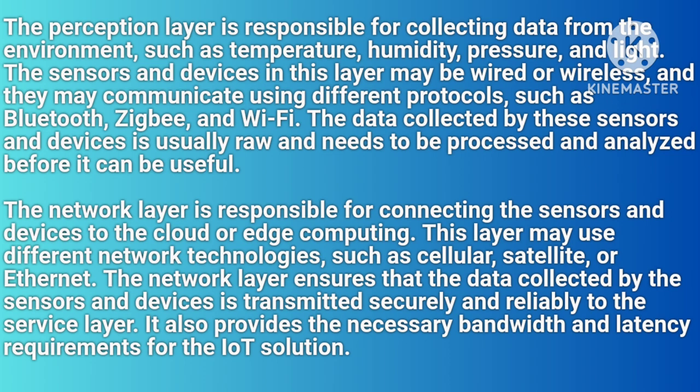The perception layer is responsible for collecting data from the environment, such as temperature, humidity, pressure, and light. The sensors and devices in this layer may be wired or wireless, and they may communicate using different protocols such as Bluetooth, Zigbee, and Wi-Fi. The data collected by these sensors and devices is usually raw and needs to be processed and analyzed before it can be useful.